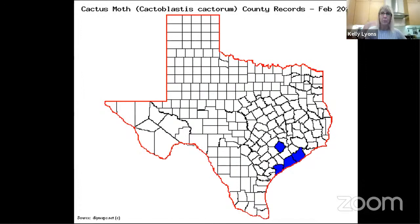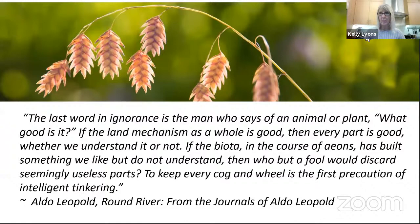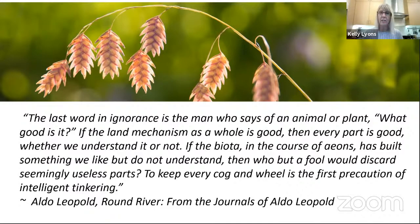This illustrates the hubris of thinking we can move exotic species around and it will be fine. Some people are even suggesting using exotic species to control invasive exotic species — I think that's a bad idea altogether. This is why we need better native-based solutions. As Aldo Leopold said: 'The last word of ignorance is the man who says of an animal or plant, what good is it? If the land mechanism as a whole is good, then every part is good, whether we understand it or not. To keep every cog and wheel is the first precaution of intelligent tinkering.'